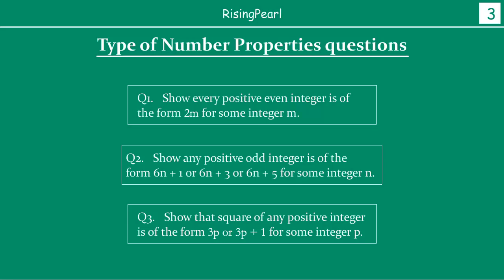Now friends, I am highlighting here the different types of number property questions that may come up. The moment you see these kinds of questions, you will be confused, because it is not mentioned anywhere that we have to use Euclid's division lemma. If the question were written as 'using Euclid's division lemma, show every positive even integer is of the form this,' at least that way we would be able to relate it to Euclid's division lemma.